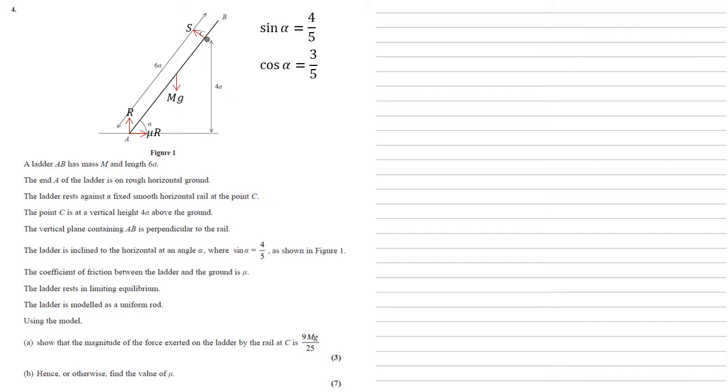Now we've got our diagram down we can solve the question. To solve this we're going to take moments around A. We're going to do this because we don't know what R is, our reaction force. Taking moments around A means that because R is at A we don't need it, it doesn't matter what size it is, we're not going to use it.